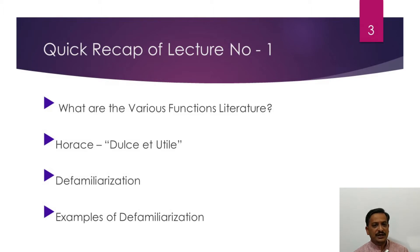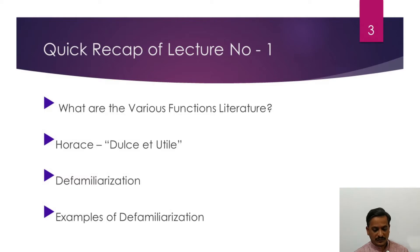In the previous video lecture, we studied the various functions of literature. We studied that literature is at times pleasure, instruction, it is spontaneous, but it is also a work of serious planning, wherein it has propaganda and also many other uses. We also studied about Horace and his dictum Dulce et Utile, wherein he described poetry or literature as something which has the combined elements of sweetness and utility. We also studied about the theory of defamiliarization, wherein the act of making familiar things strange gives us a new perception towards an object or idea which we did not have earlier.